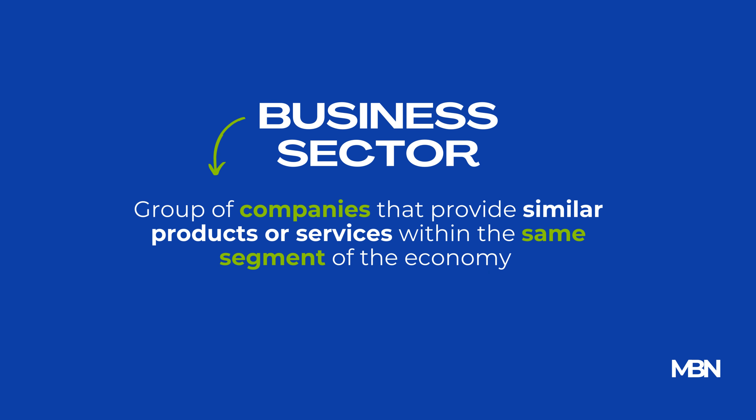To recap, a business sector is a group of companies that provide similar products or services within the same segment of the economy. The three main sectors are the primary sector, which extracts raw materials; the secondary sector, which manufactures finished products; and the tertiary sector, which provides services. Understanding business sectors is important for businesses, investors, and anyone who wants to learn more about how the economy works.